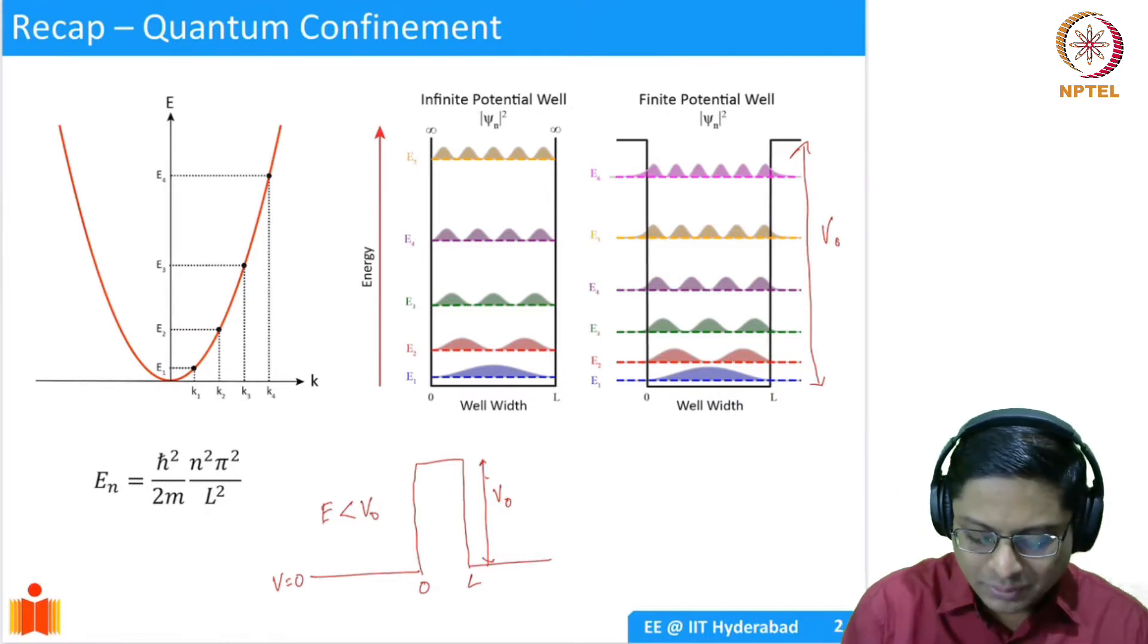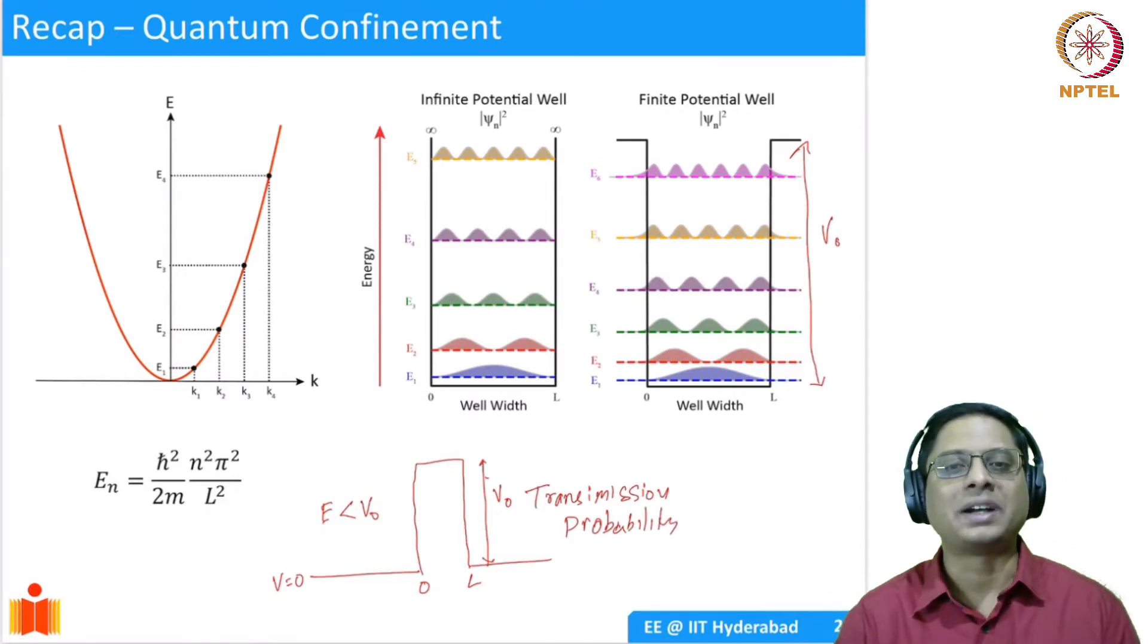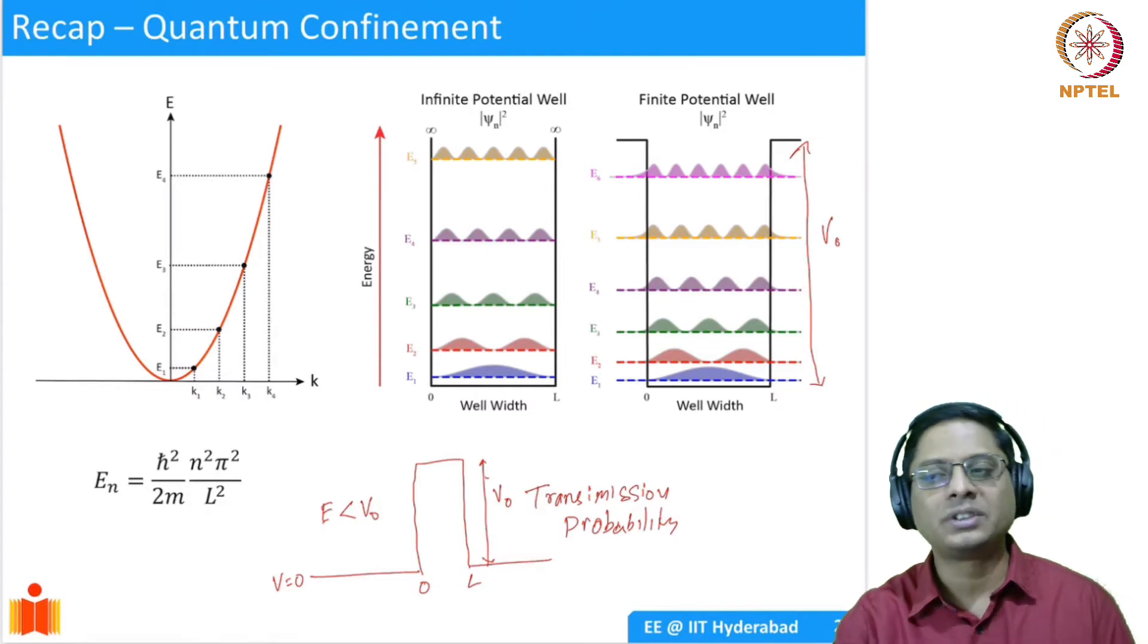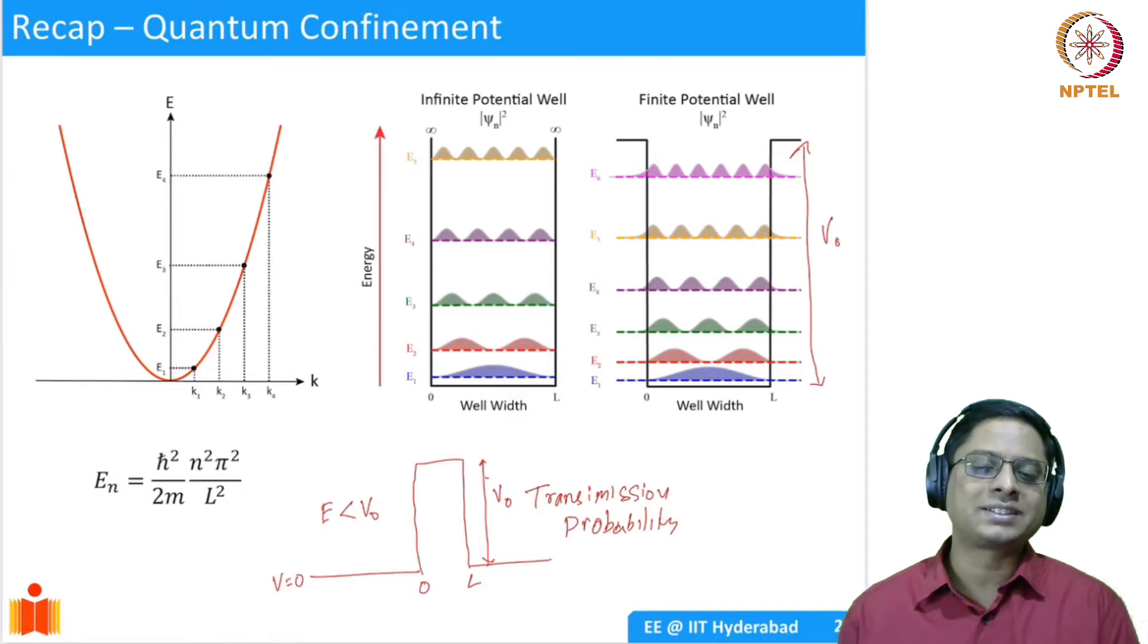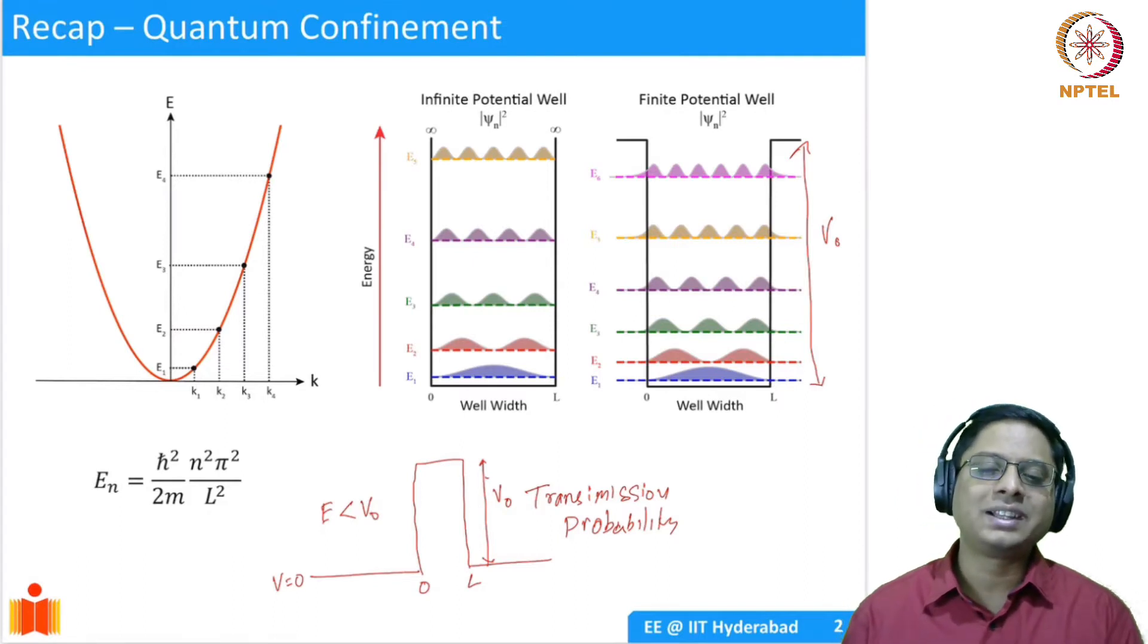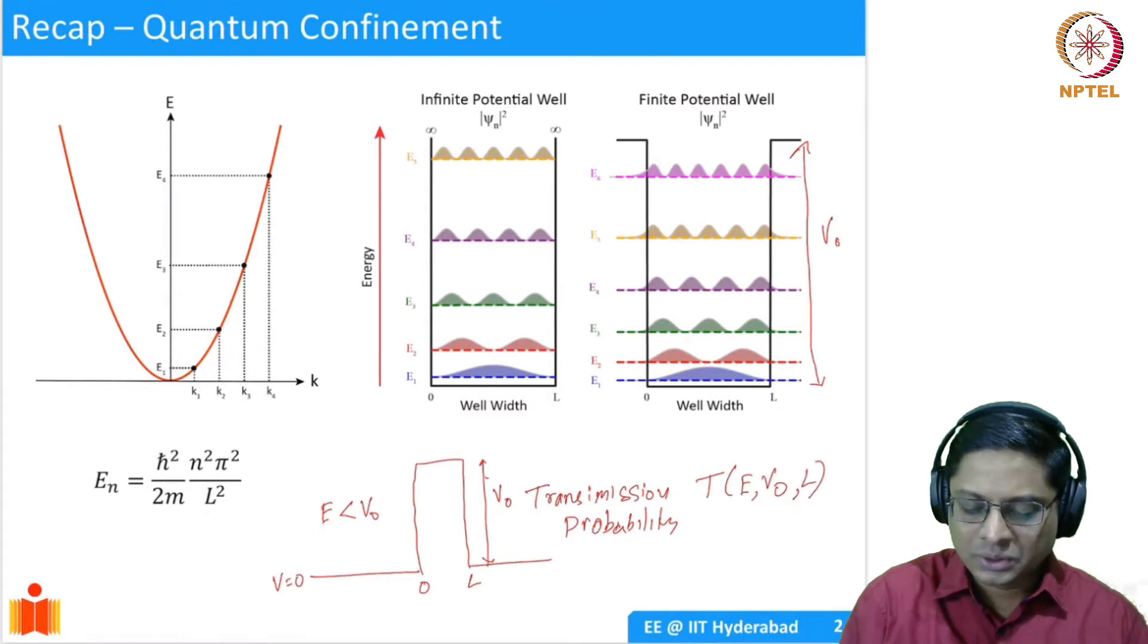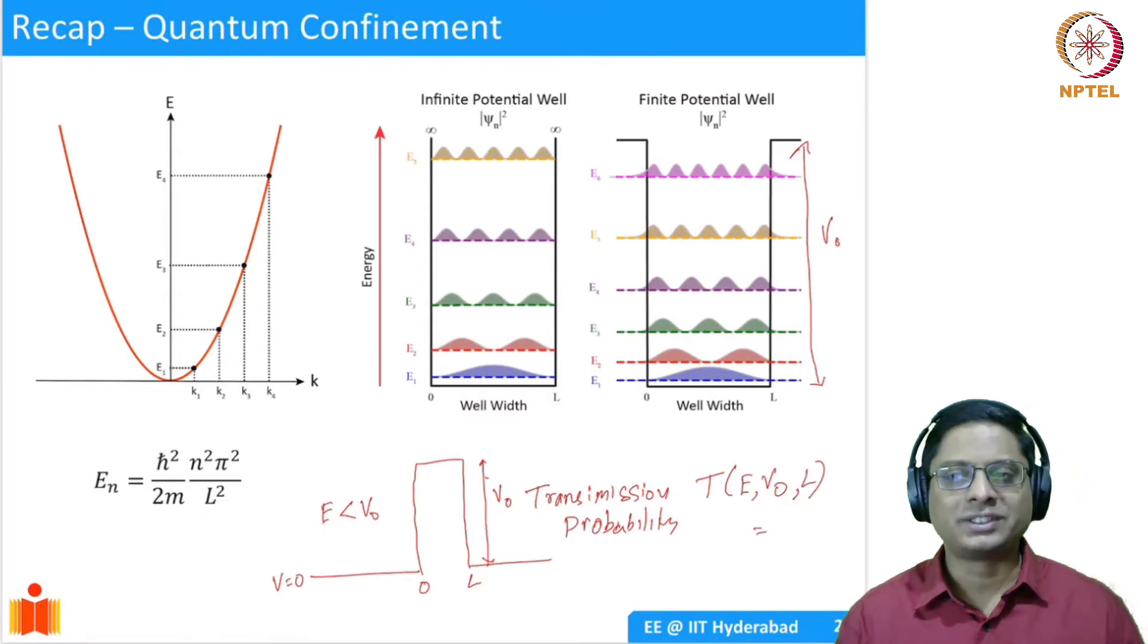classical mechanics tells us there is no probability of finding the electron on the other side. If you look at transmission probability, for example, if I have 100 particles incident on the barrier from the left side, how many will actually get transmitted to the other side? That is the transmission probability. Classical mechanics tells us you don't have any probability of finding particles on the other side. But quantum mechanically, there is a finite transmission probability, and you could solve it and get an expression.